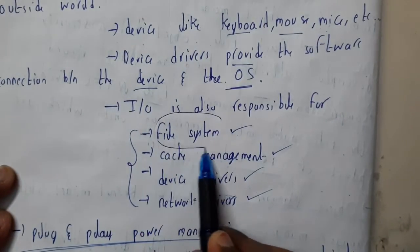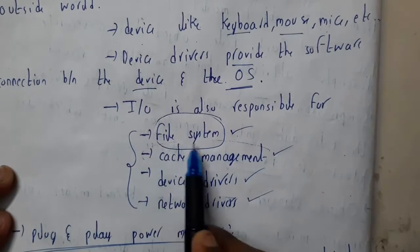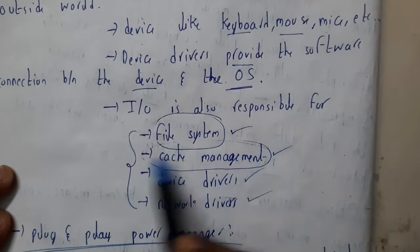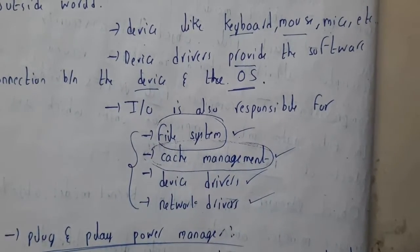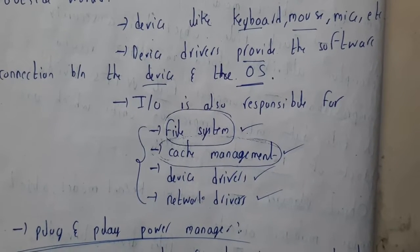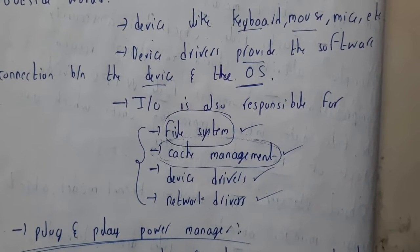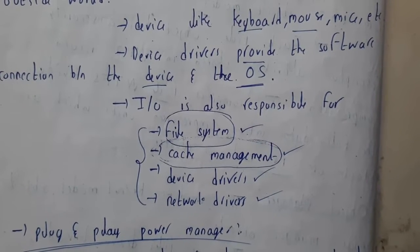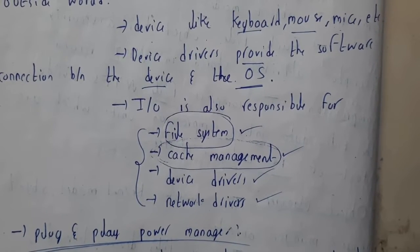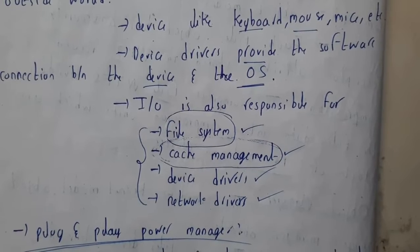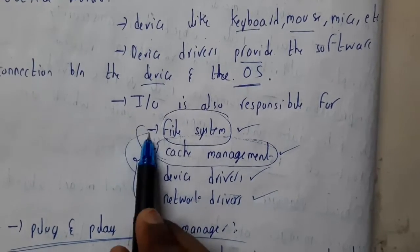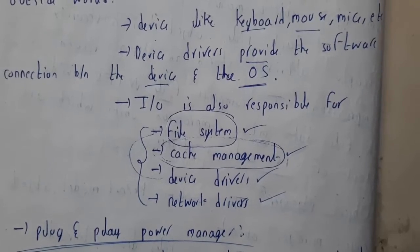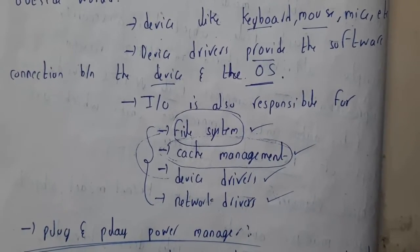In the next tutorial, we will go through the basic file system. Cache Manager stores frequently used data. Device drivers - each device has drivers that are stored in the file system. Network drivers I took as a separate topic on networking.